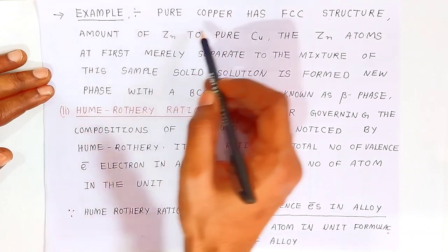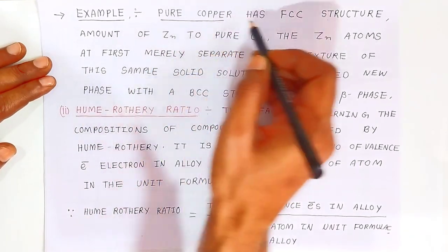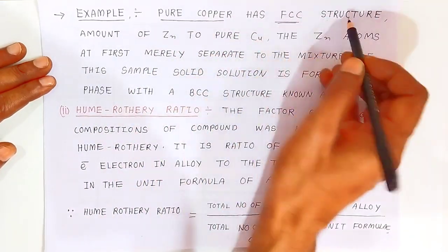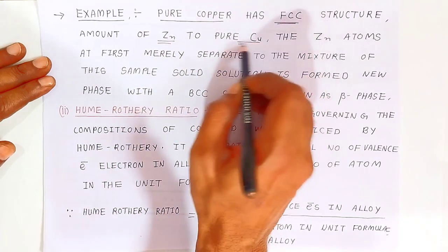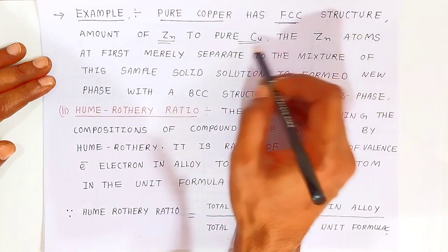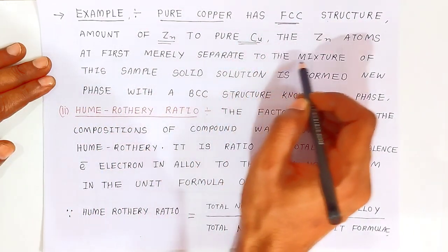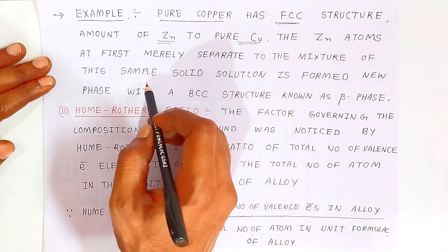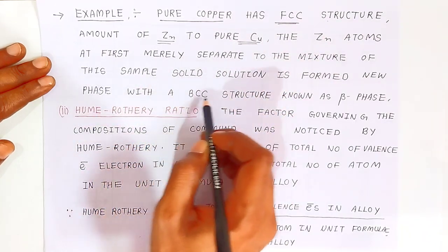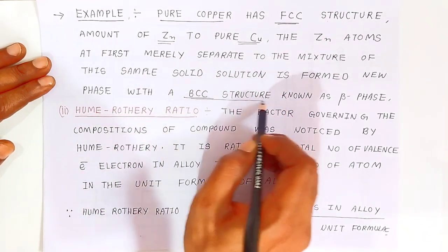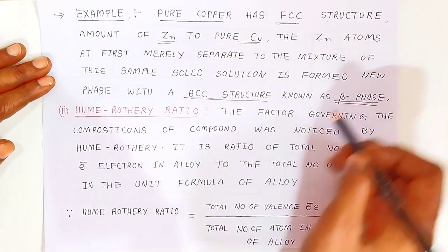Example: pure copper has FCC structure. When you add zinc to pure copper, the zinc atoms at first merely substitute into the solid solution, then a new phase with BCC structure is formed. It is known as beta phase — the alloy will have beta phase.